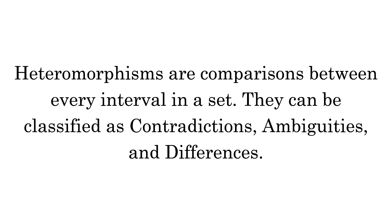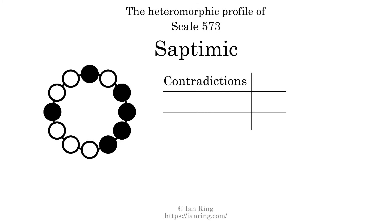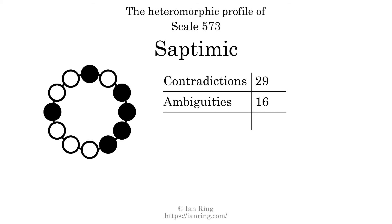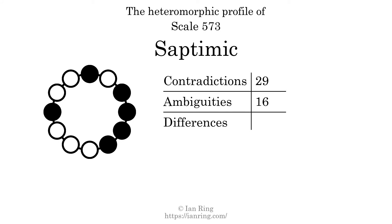Heteromorphisms are comparisons between every interval in a set. They can be classified as contradictions, ambiguities, and differences. A contradiction exists when a small generic interval has a bigger specific size than a larger generic interval — for example, if a generic third interval has a larger size in semitones than a generic fourth interval. The number of contradictions in this scale is 29. An ambiguity exists when two intervals have the same specific size but different generic intervals. The number of ambiguities in this scale is 16. A difference exists when two intervals have the same generic size but different specific sizes — for example, a major third and a minor third. The number of differences in this scale is 64.